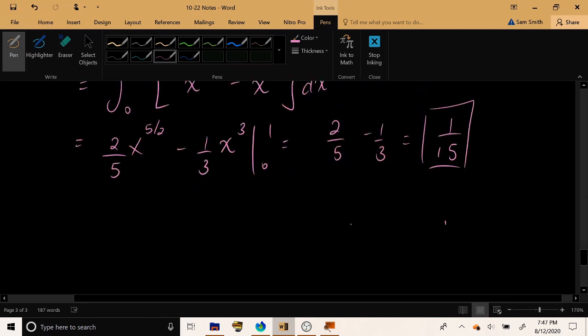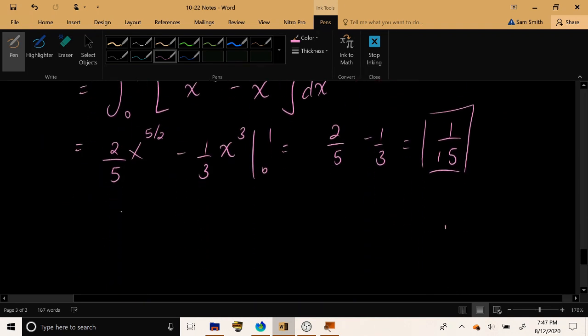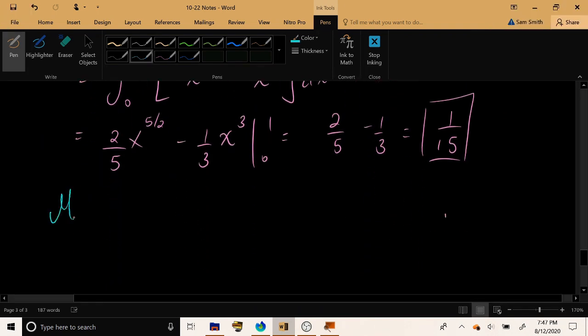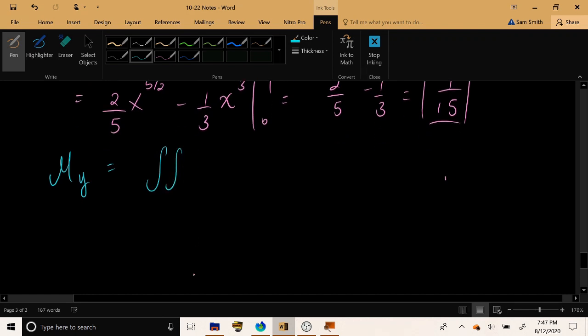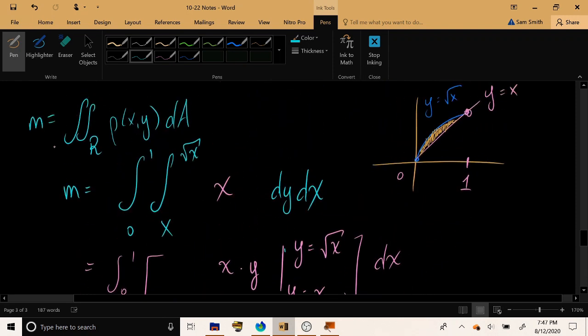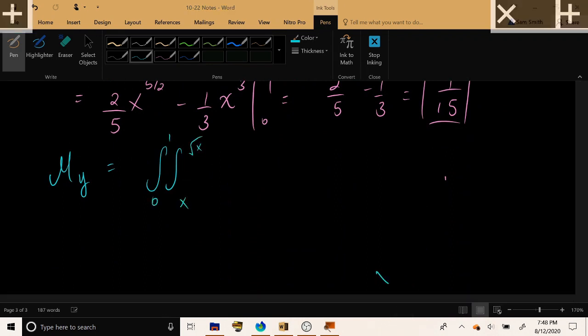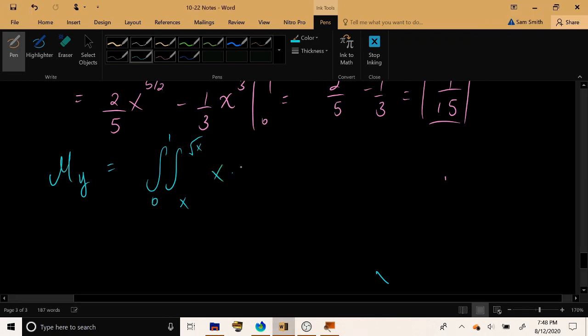Okay, so now that we've calculated the total mass, let's start calculating some of the moments. Let's look at the moment perhaps in the y direction first, the moment about the y-axis. Now, the limits of integration are exactly the same as they were when we were calculating the total mass, because the region itself has not changed. The only thing that will change as we're calculating the moments is the integrand itself.